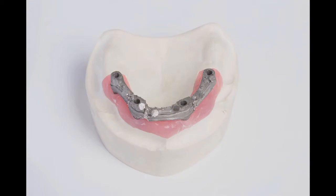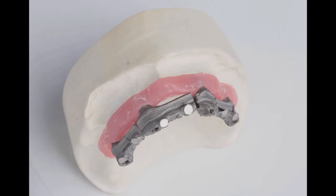Cast metal bars have traditionally been used in fixed removable implant cases as a solution to increase the strength of an acrylic prosthesis and more evenly distribute load-bearing forces across the implants.